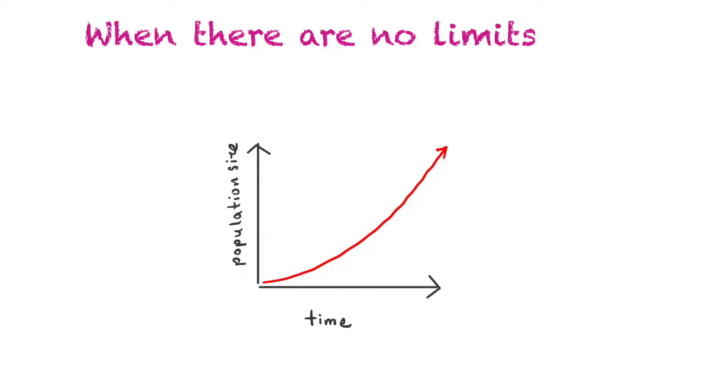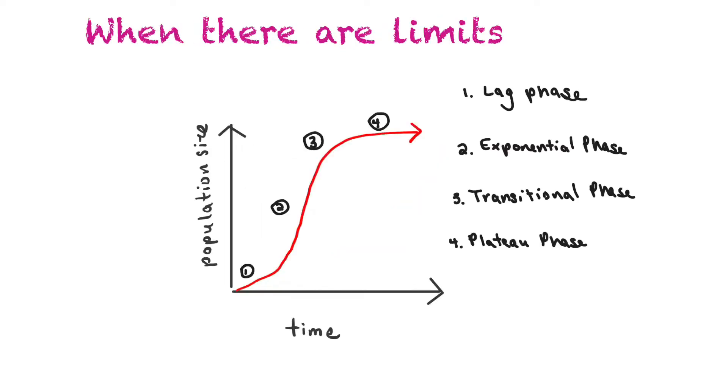If there were no limits in a population it would continue to grow exponentially and it would take a shape like this so it continued to climb and climb and then it would never taper off. In reality populations do have limits because populations are interacting with other members within the population and other factors.